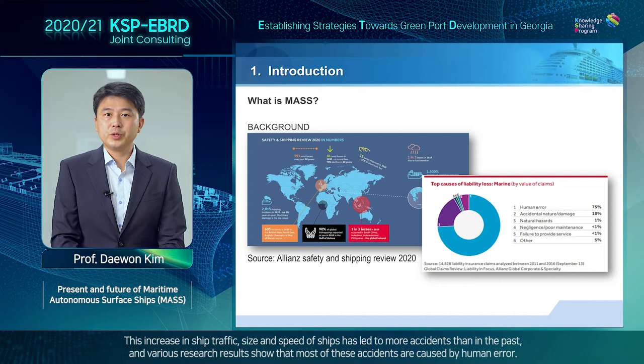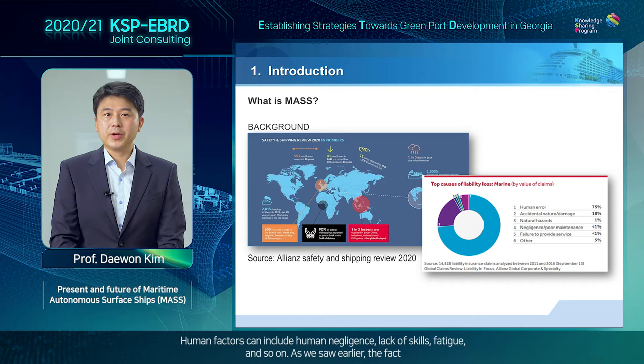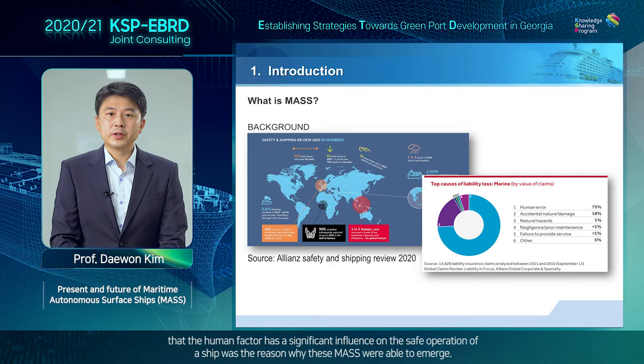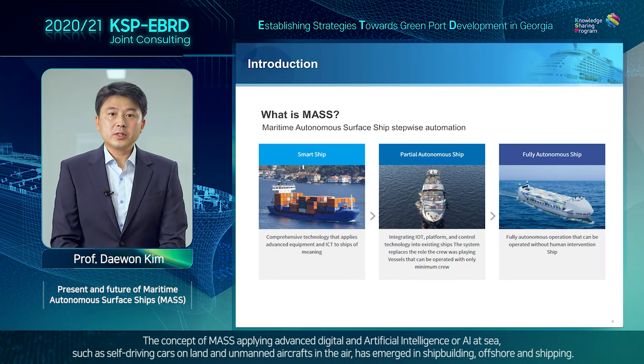This increase in ship traffic, size, and speed of ships has led to more accidents than in the past, and various research results show that most of these accidents are caused by human error. Human factors can include human negligence, lack of skills, fatigue, and so on. The fact that the human factor has a significant influence on the safe operation of a ship was the reason why MASS was able to emerge.